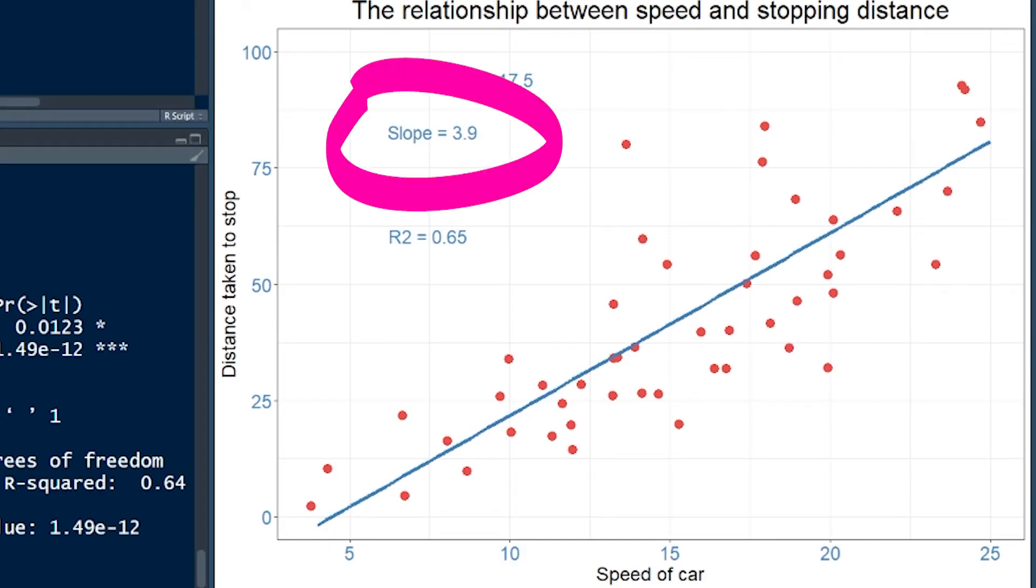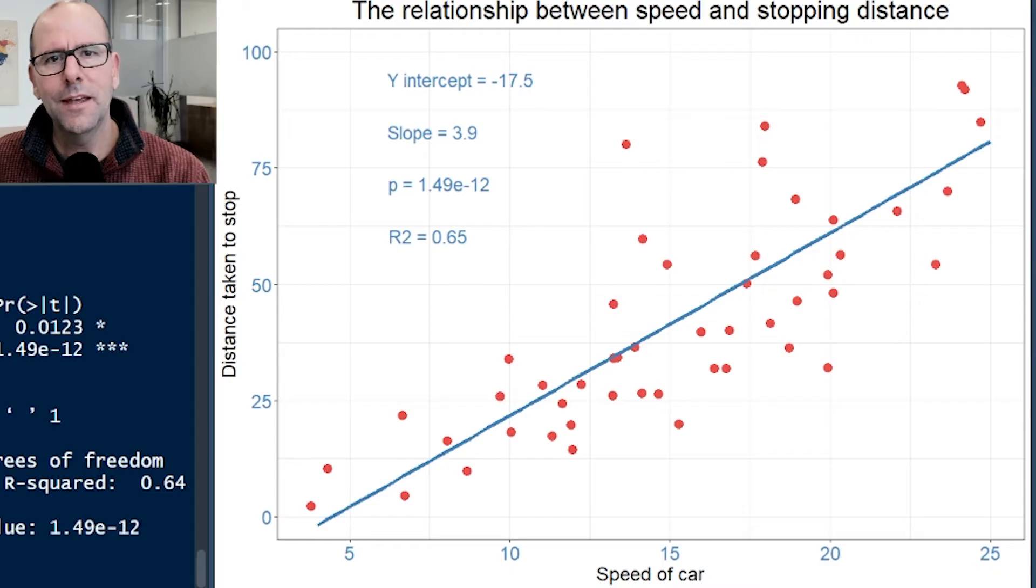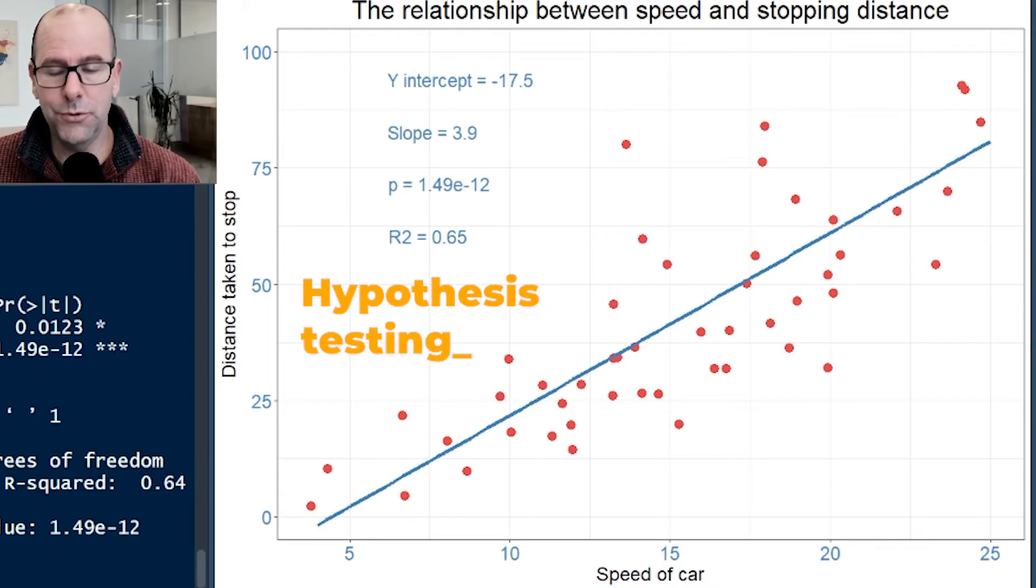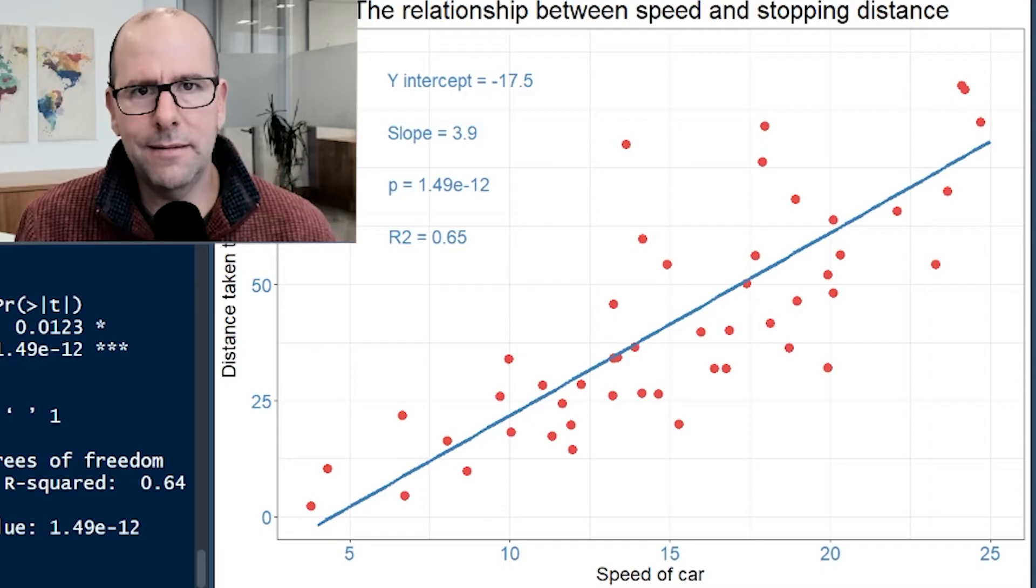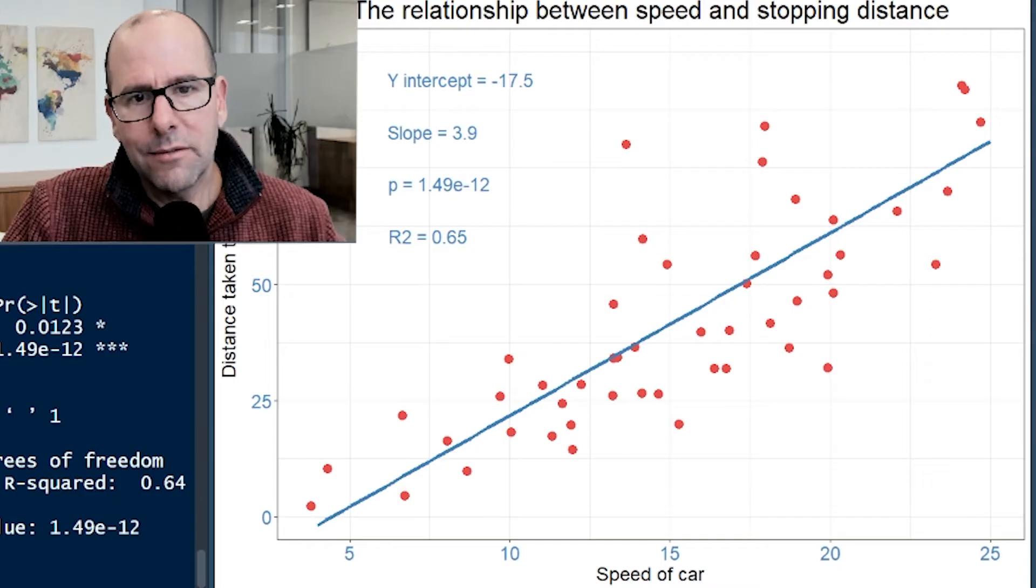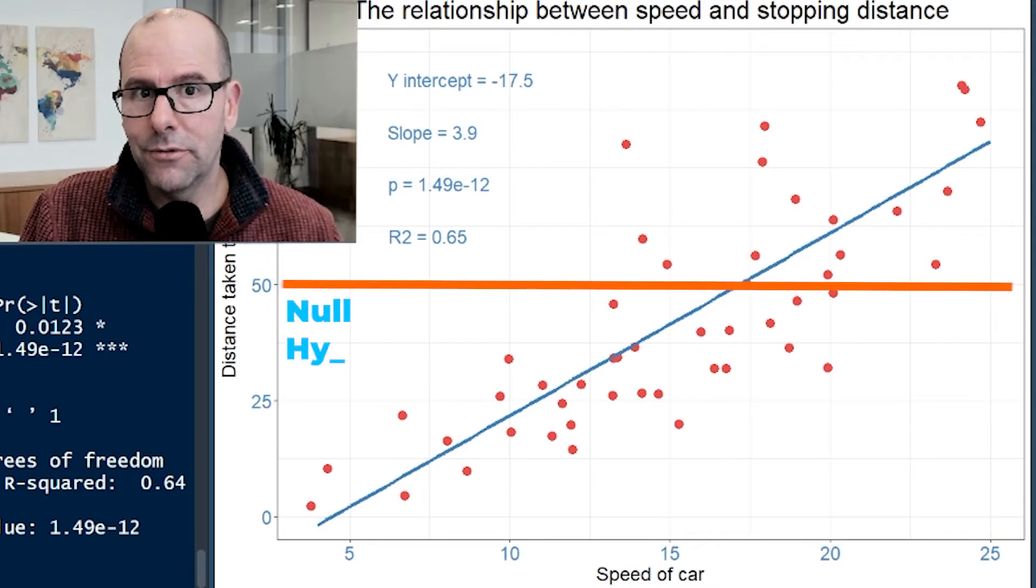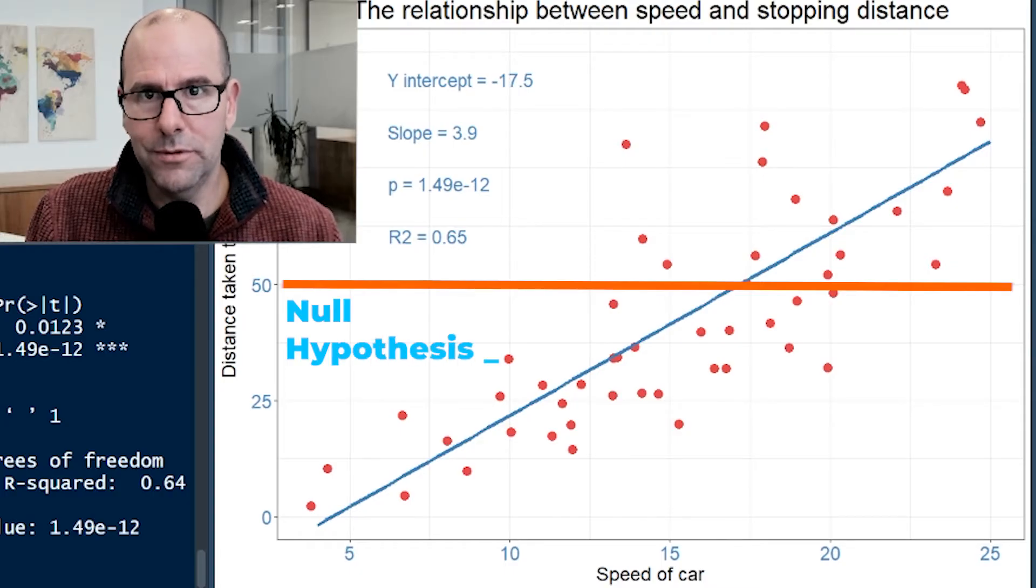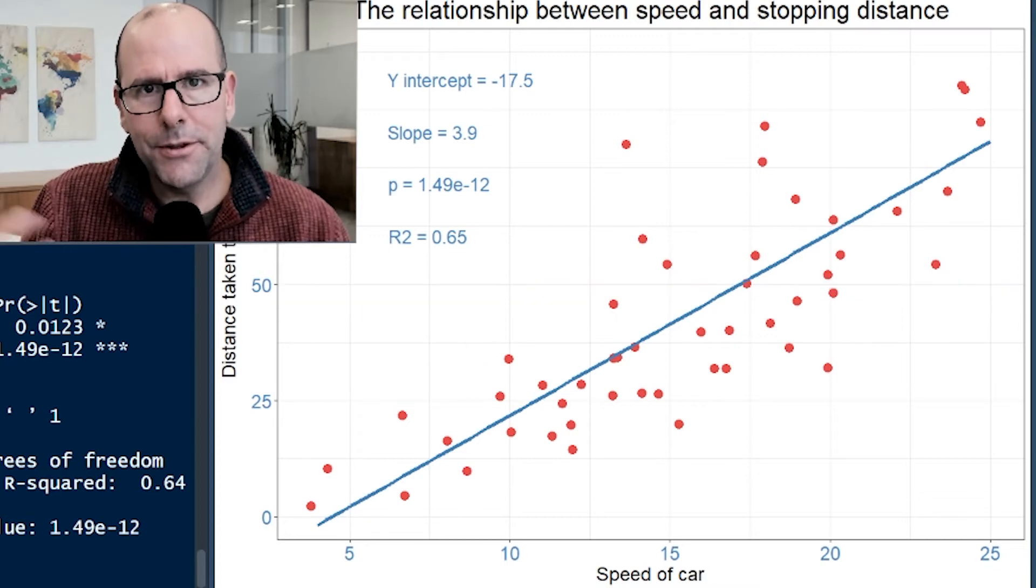We've got a slope of 3.9 and a p-value for that slope. What does that mean? You'll be familiar with hypothesis testing. The null hypothesis here would be that the slope is zero, that there is no relationship up or down, no change in y with a change in x. That would give us a slope of zero.